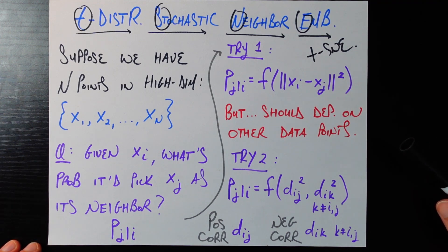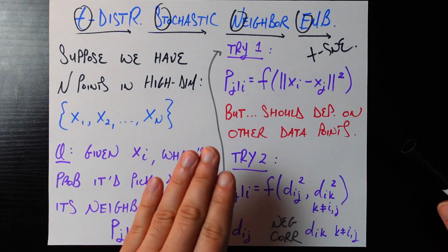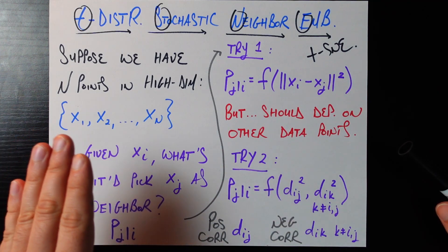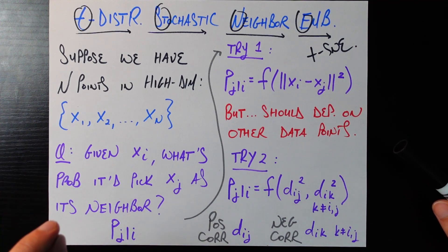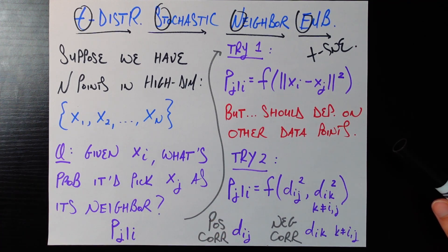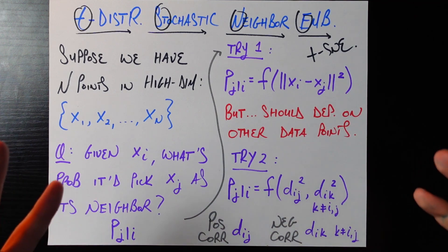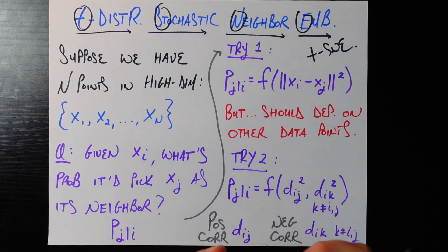Our goal is to eventually get a set of n vectors, y1, y2, all the way to yn, who are in a much, much lower dimensional space — typically a two or three dimensional space — which lets us do things like visualize this data, which we couldn't do before.